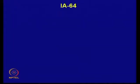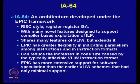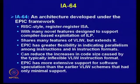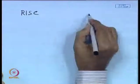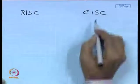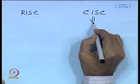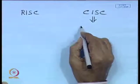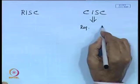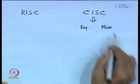IA64 is the architecture developed based on this EPIC approach and has many inherent features. Number one: it is RISC-style register-register ISA. Instruction set architecture can be of two types — RISC and CISC. In CISC architecture, the ALU can perform operations with the content of a register and also with the content of memory.